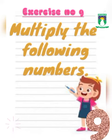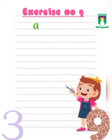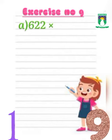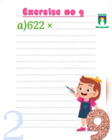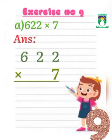Our first question is 622, multiply by 7. Write these numbers vertically.